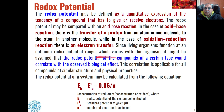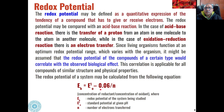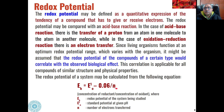Redox potential of a system may be calculated quantitatively through the equation: Eh = E01 − 0.06/n, where Eh is the redox potential of the system being studied, E01 is the standard potential at a given pH in that system, and n is the number of electrons being transferred during the reaction.